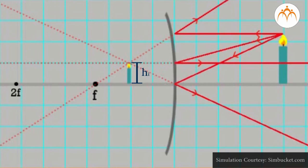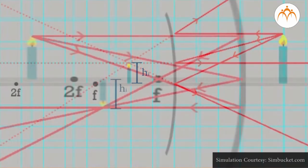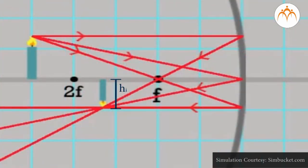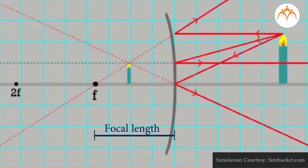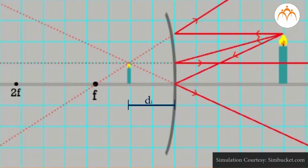Height of image hI is positive if the image is an upright image and therefore also virtual. Height of image hI is negative if the image is an inverted image and therefore also real. For convex mirrors, focal length is always negative, as is the image distance.